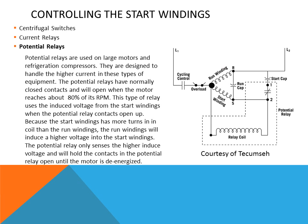Potential relays are used for larger motors and compressors and are designed to handle higher current. They are sometimes called voltage relays because they use the inductive voltage from the start windings — which generates a higher voltage than the applied voltage — to send voltage to the relay coil. This relay coil only senses the higher inductive voltage. The potential relay has a normally closed set of contacts that will open once the inductance in the start winding increases, and will remain open until the compressor is de-energized.